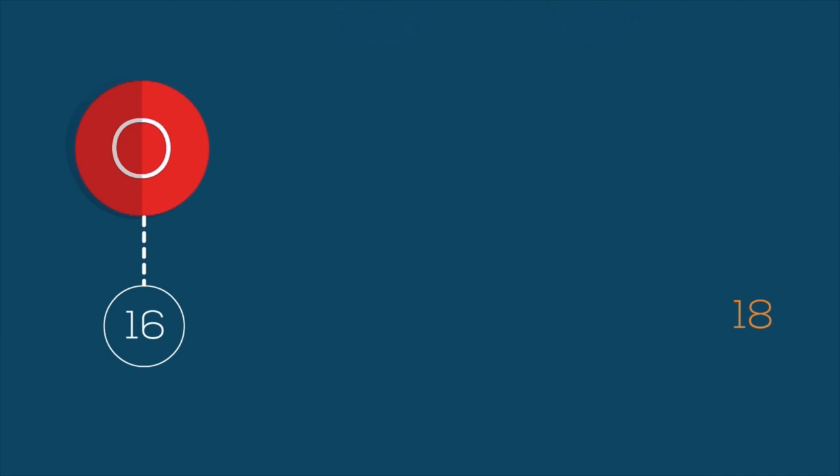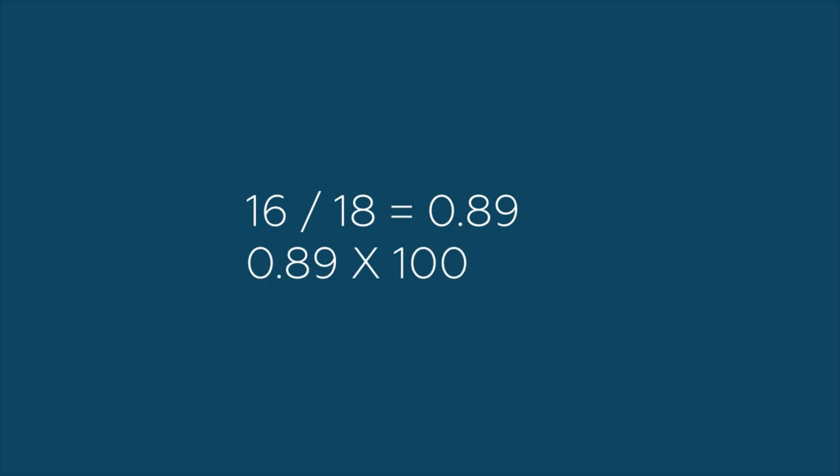We then divide the molecular mass of the oxygen atom, 16, by the total molecular mass, 18. Finally, we multiply the quotient of 0.89 by 100, and there we go, the percentage mass of oxygen in water, 89%.